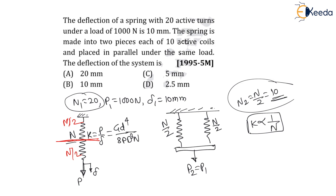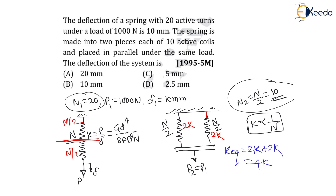For each cut spring the stiffness k will be 2k. This is common sense: if the number of active coils becomes half, and number of active coils is inversely proportional to k, then k must become twice — so the stiffness becomes 2k for each spring. As both springs are in parallel, the equivalent stiffness k_eq = 2k + 2k = 4k.